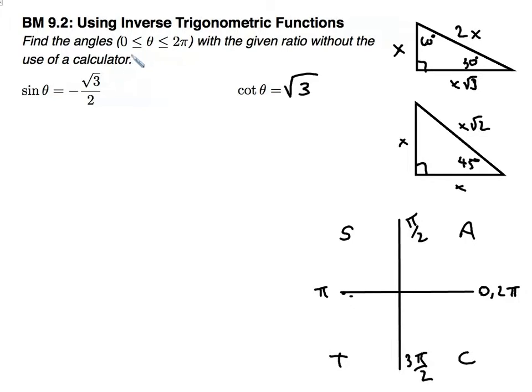It asks us to find the angles, which are between 0 and 2 pi, with a given ratio without the use of a calculator, so no calculator again.